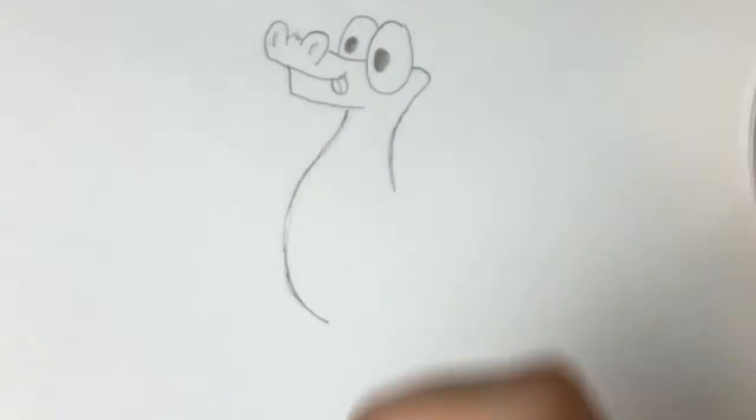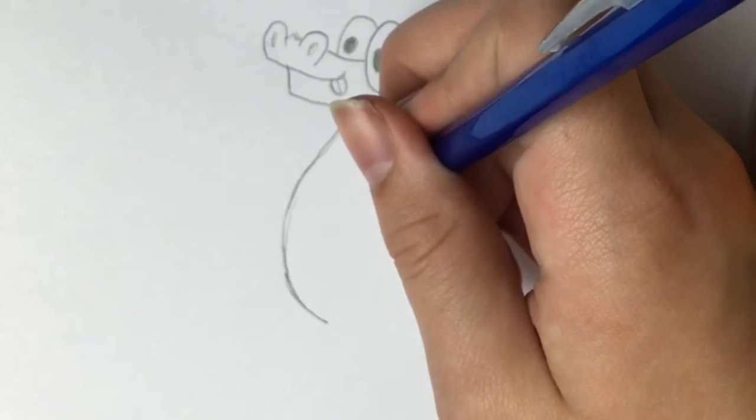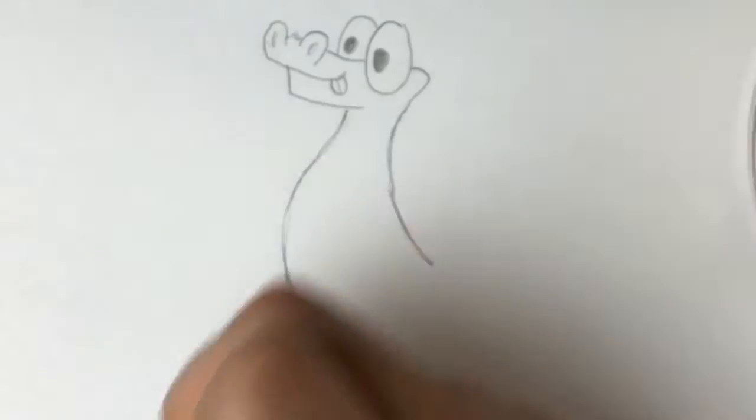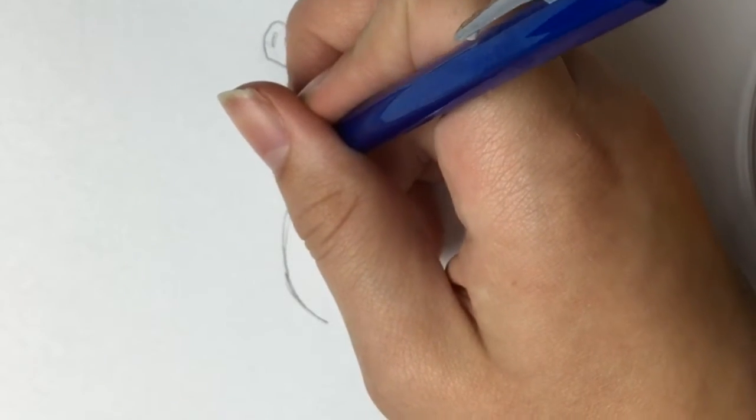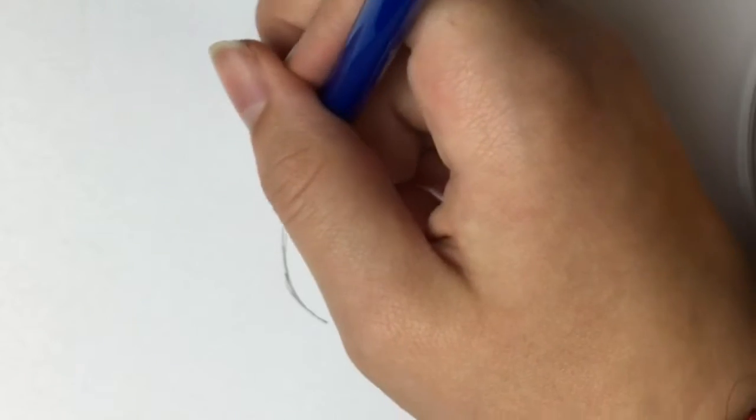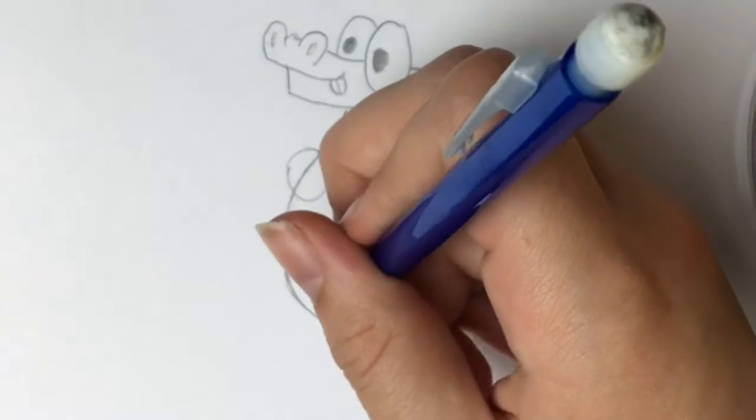Now from the line at the back of the head, extend that into a curved line like the previous one. Now draw a small circle around Joe's chest and one at the bottom of the two curved lines, the second one being much bigger.